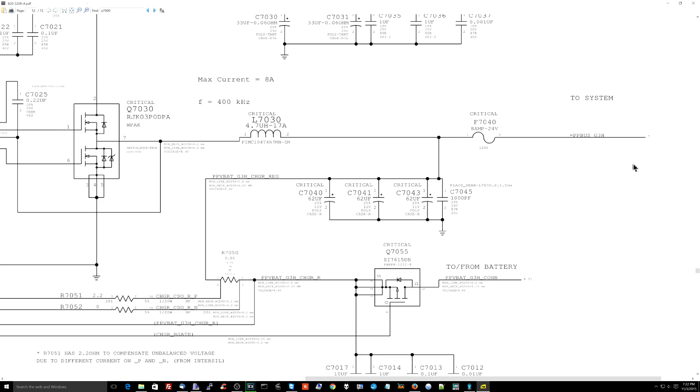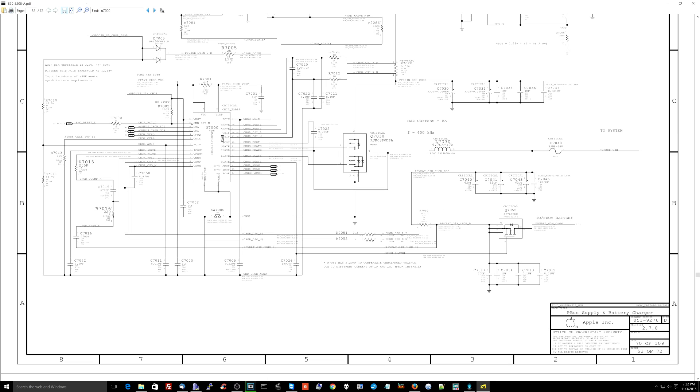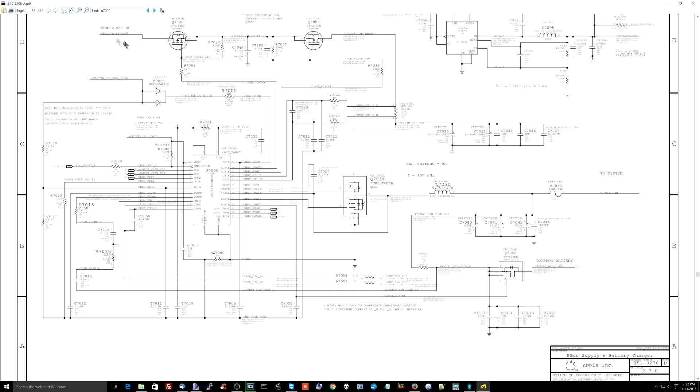PPBUS_G3HOT is one of the main system lines that most of the system runs off of. It's created by this buck converter over here. If the buck converter is not working because the charger is not attached, then instead of PPBUS_G3HOT coming from the buck converter, which is coming from the charger, it's going to come from the battery.